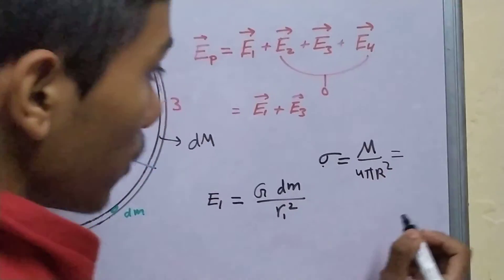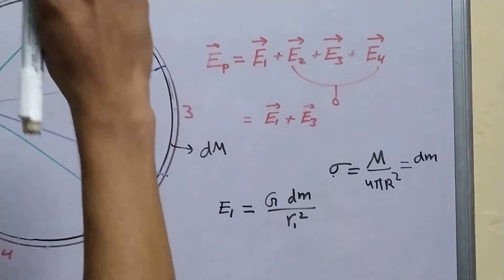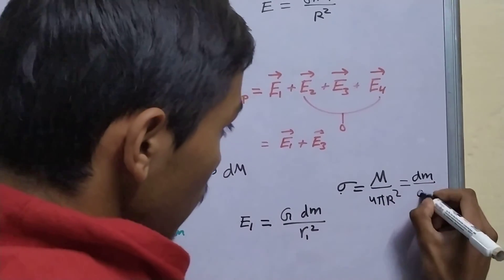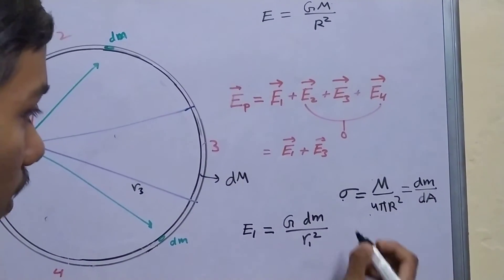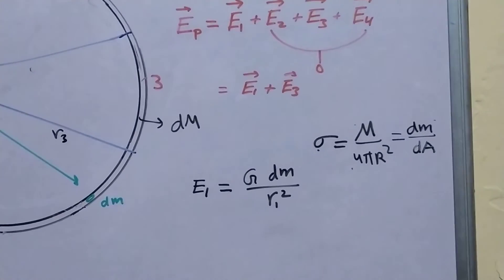And if it's uniform, this will be the same as, if you take a very small chunk, then the mass density will remain the same, therefore, we can write sigma as dm by dA.